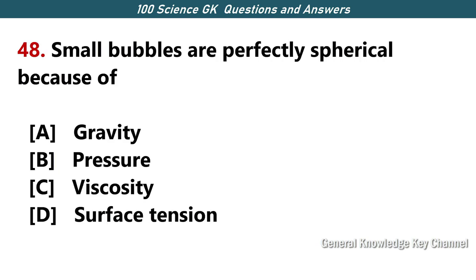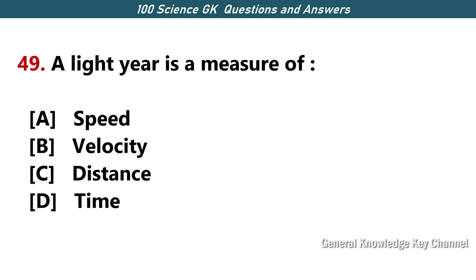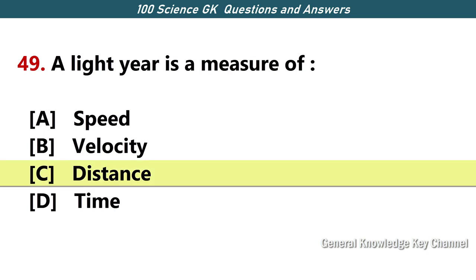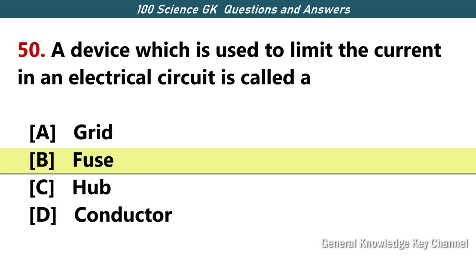Small bubbles are perfectly spherical because of — Answer D — surface tension. A light year is a measure of — Answer C — distance. A device which is used to limit the current in an electrical circuit is called — Answer B — a fuse.